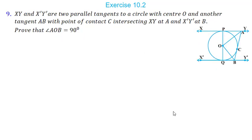Now let us move to the ninth question. XY and X'Y' are two parallel tangents to a circle with center O, and another tangent AB with point of contact C intersects XY at A and X'Y' at B. We have to prove that angle AOB is 90 degrees. In the diagram, XY and X'Y' are two parallel tangents, and tangent AB touches the circle at point C.